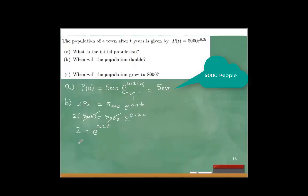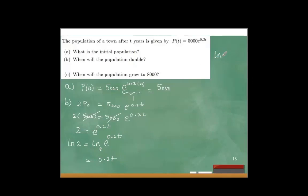We're solving for T — the variable is at the exponent level and we cannot make the base the same, so take the natural log of both sides: ln(2) = ln(e^(0.2T)). Since the base is e, the right-hand side simplifies to 0.2T. Dividing both sides by 0.2, T = ln(2)/0.2, which is approximately 3.47 years.